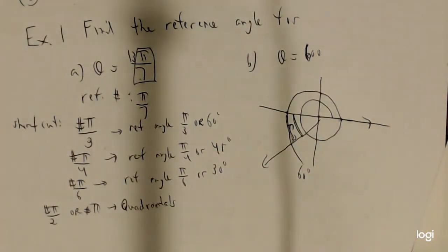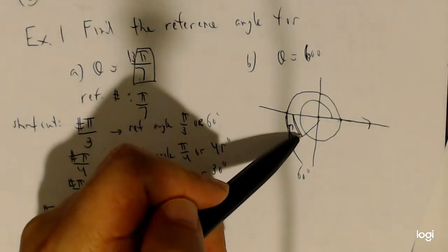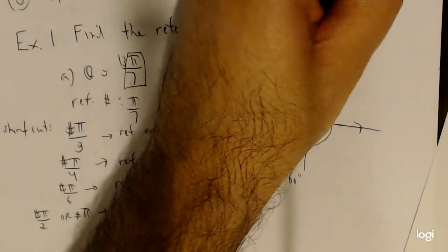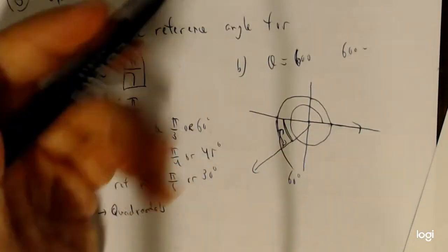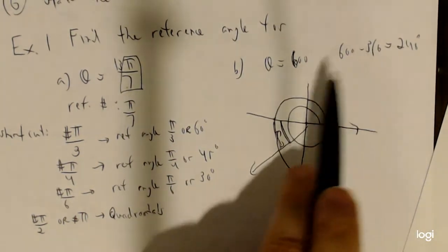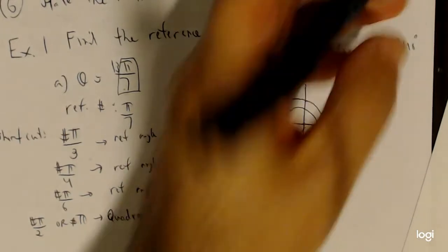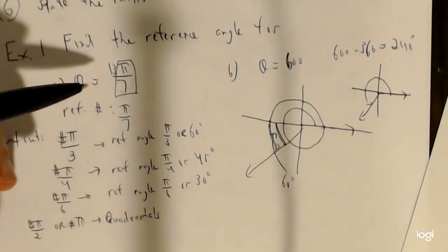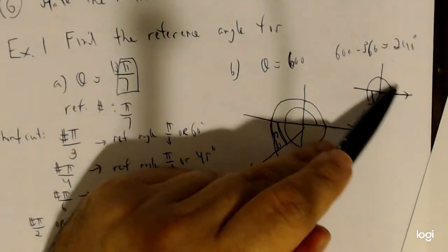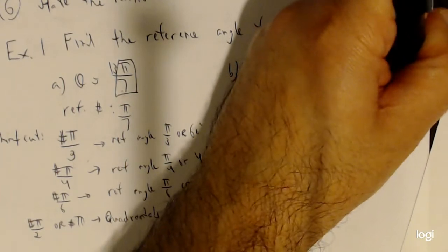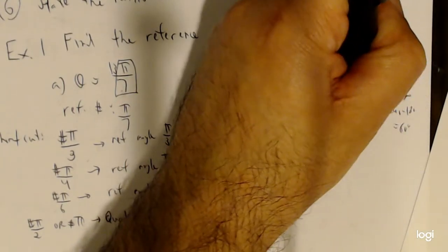Another way: subtract 360 from 600 to get 240, which is between 0 and 360 and lands in quadrant 3. Then 240 minus 180 equals 60 degrees. Both methods give the same reference angle of 60 degrees.